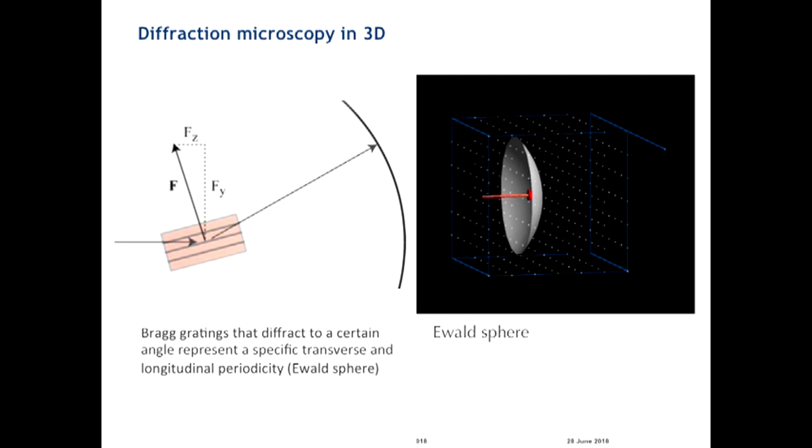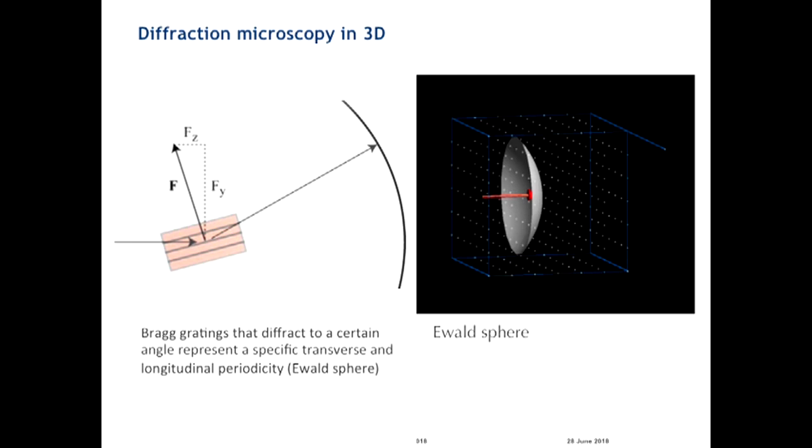So in an actual measurement, a kind of cartoon of that Ewald sphere, or the part of it that we measure, will look like this piece of a shell, a segment of the spherical shell that we measure out to some maximum momentum transfer or numerical aperture in the optic sense. The bigger that is, the finer the resolution that we can hope to reconstruct. So if we rotate the sample, we're mapping out now many such pieces of shells, and we can fill in that Fourier space, a reciprocal sphere, with information that we can then hope to recover the phase of to get the structure of the object.